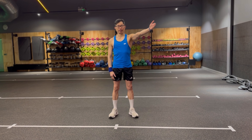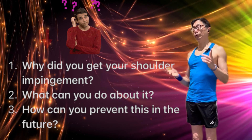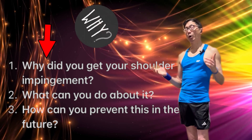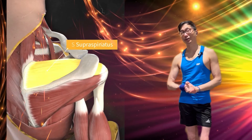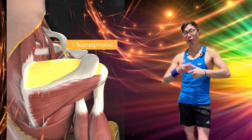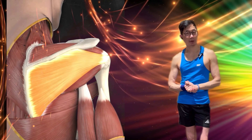The second test is the Hawkins Kennedy test. Raise your arm to the side up to 90 degrees, bend your elbow, and bring it across in front of your chest. Place your other hand on the elbow. Now internally rotate your shoulder by rotating your arm down, then bring the affected arm across the chest even more. If this causes pain in the shoulder, you are dealing with a shoulder impingement.